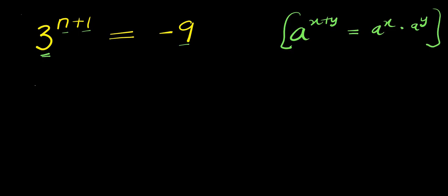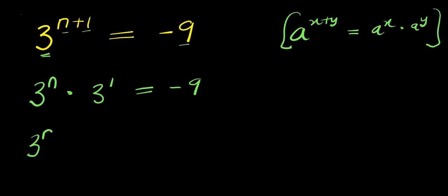Applying that here, we will have 3 to the power of n times 3 to the power of 1, and this equals negative 9. So 3 to the power of n times 3 to the power of 1 is 3 to the power of n times 3, and this equals negative 9.